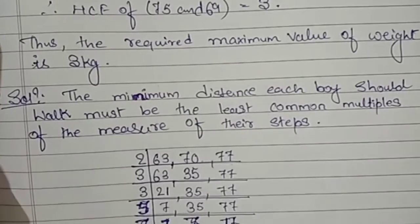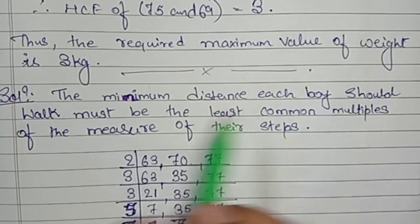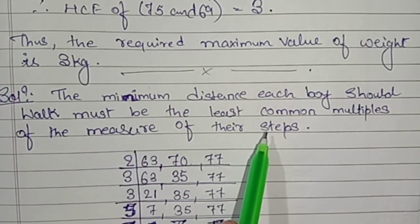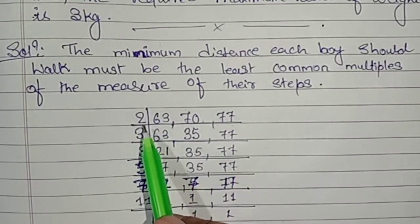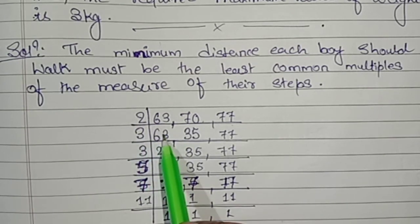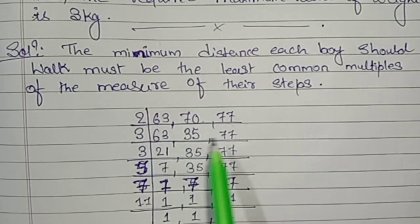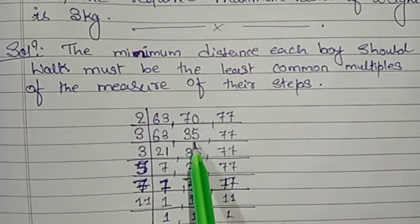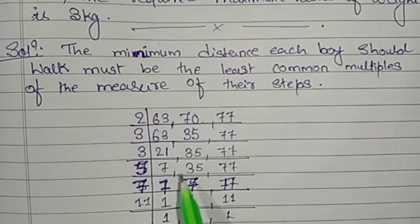Solution: The minimum distance each boy should walk must be the least common multiples of the measure of their steps. Then LCM method I have applied. So 2: 63 with 2, 63 will not go, but 70 can go. So 2 threes are 6, 2 fives are 10, 77 will not go.